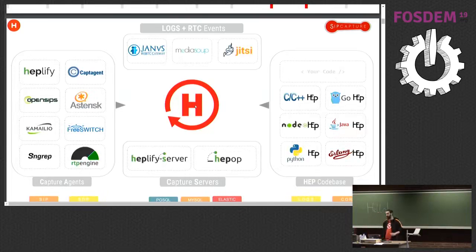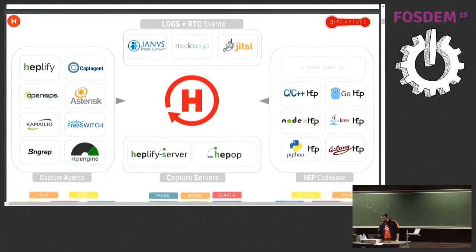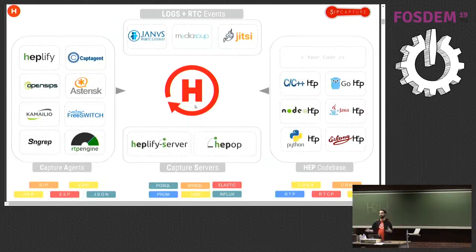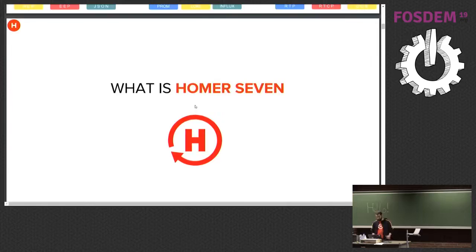Originally, we were SIP-centric — a very SIP-focused platform. The platform was initially created to track SIP, then it evolved to also track RTP, RTCP statistics, logs, and so on, until RTC became popular and we had to rethink everything all over again, which is what really happened in Homer 7.